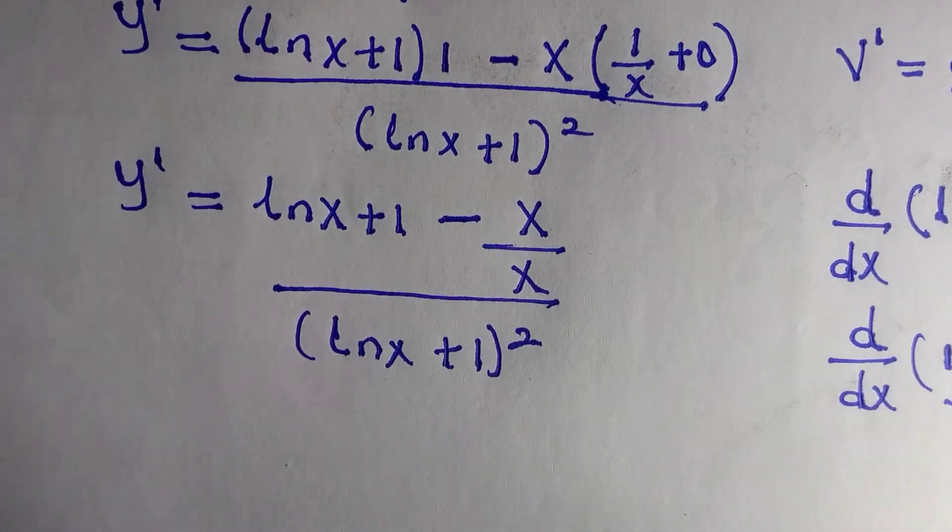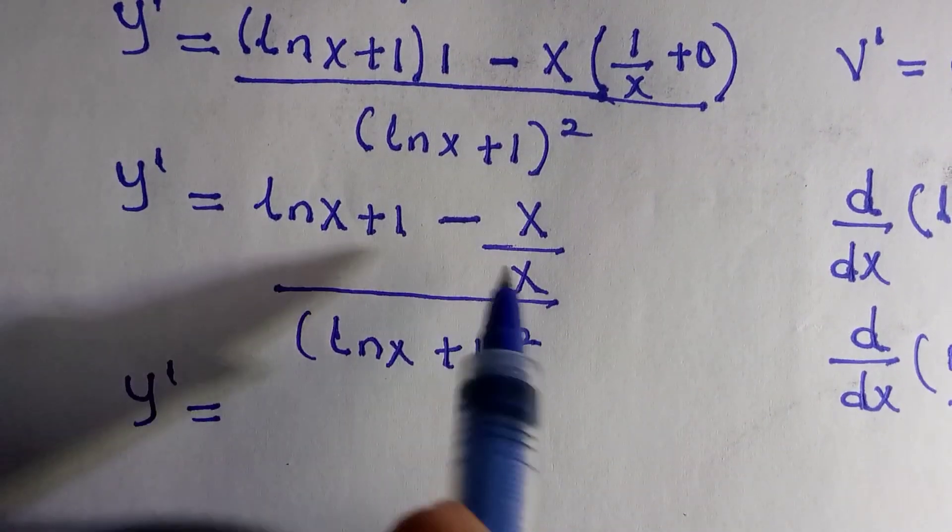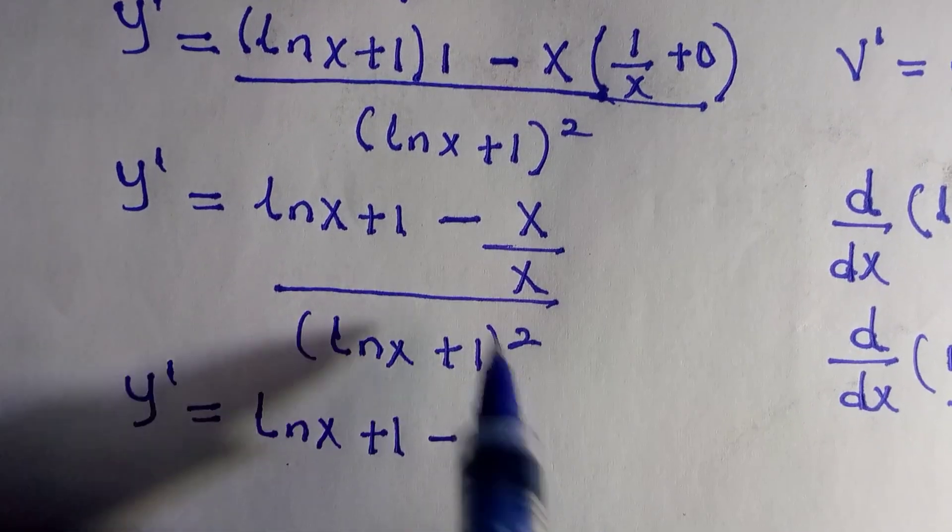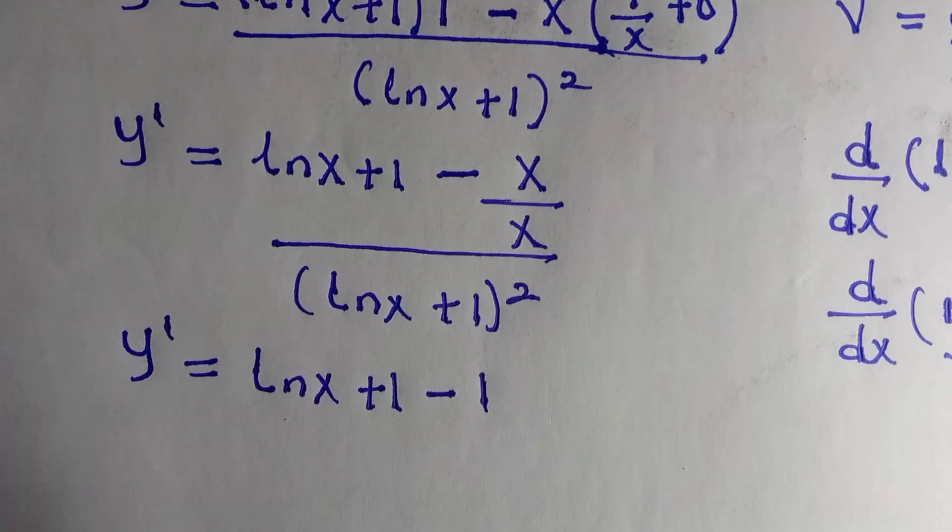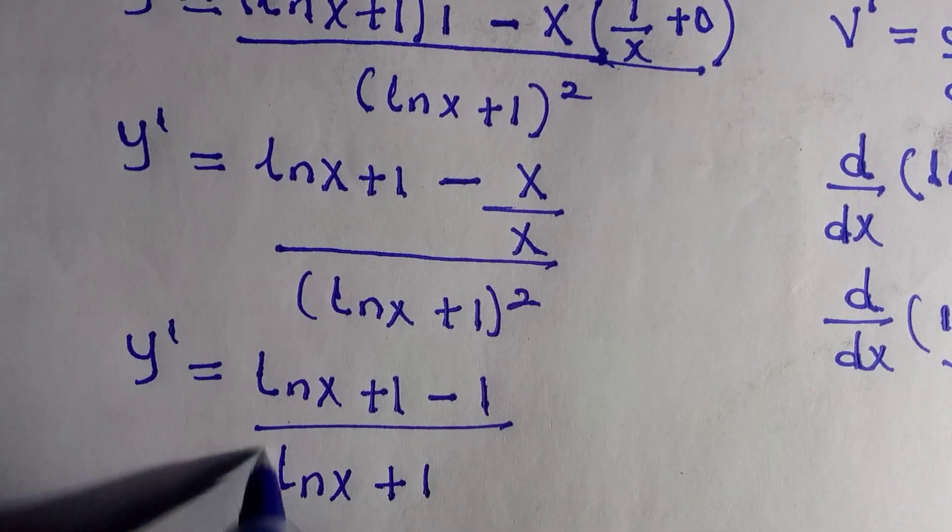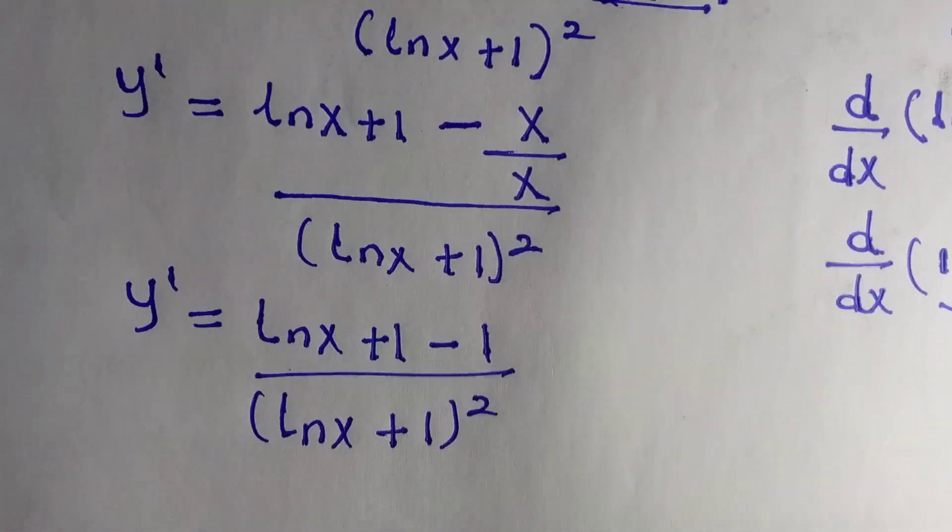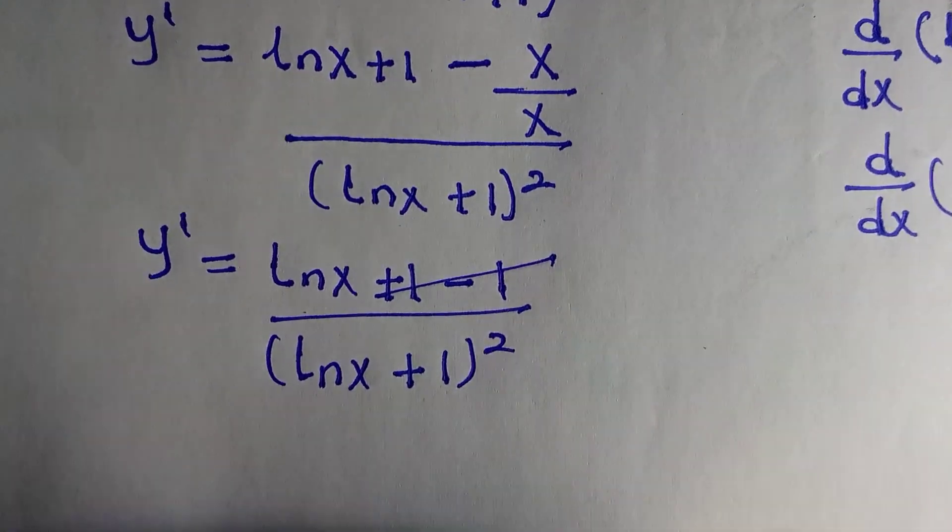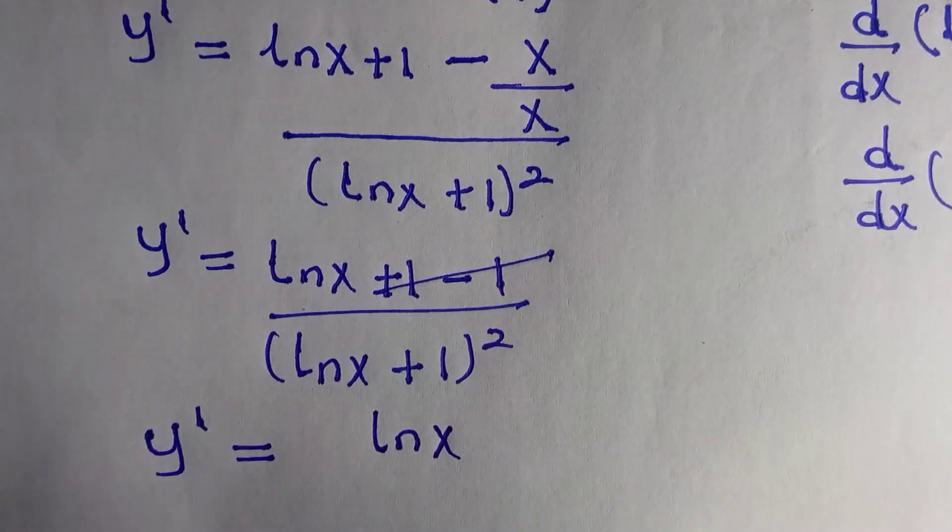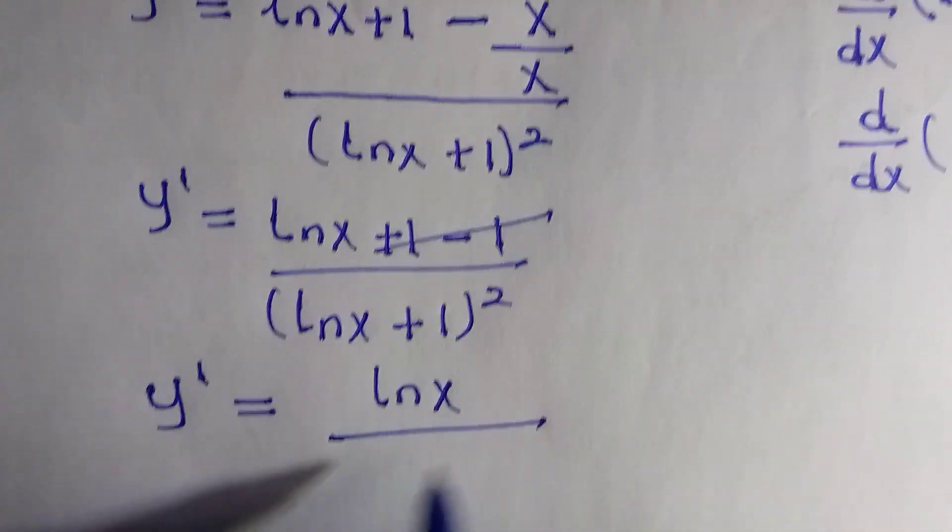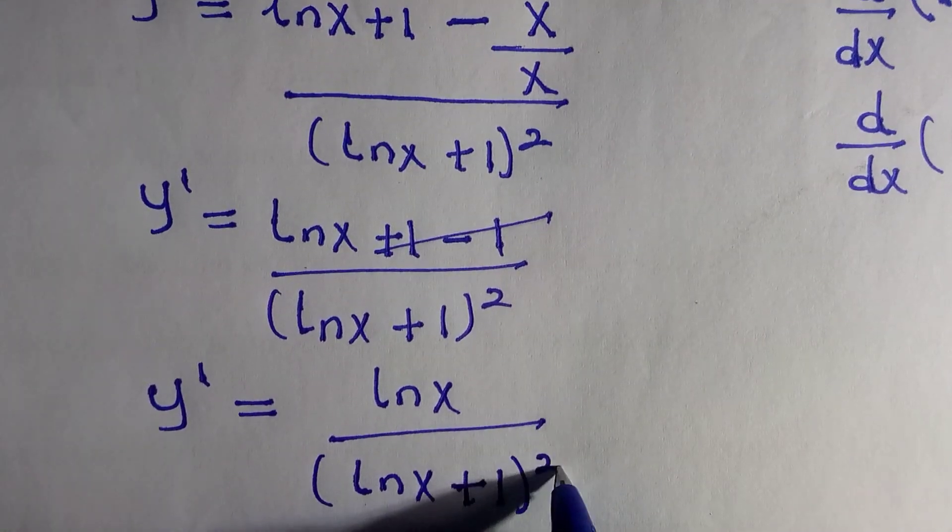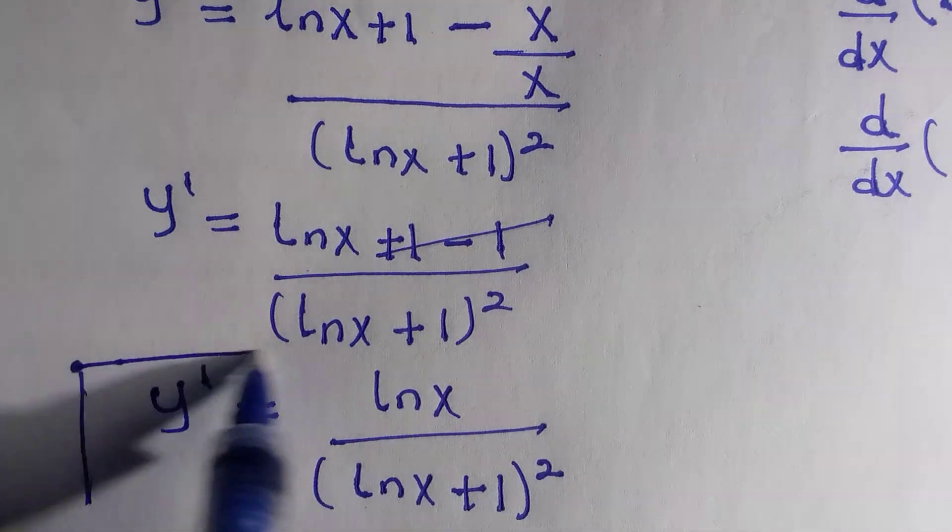Then from the above, if you have y prime equals to ln of x plus 1 minus, and x will go, that is 1, ln x plus 1, and all divided by ln x plus 1 all the way to power of 2. So plus 1 minus 1 is 0, and we have y prime equals to ln x divided by ln x plus 1 all the way to power of 2. And here is what we are asked to prove from the given questions.